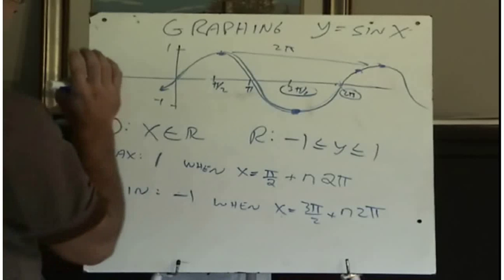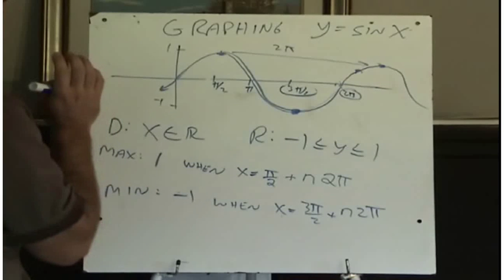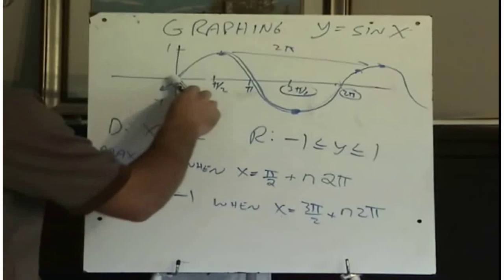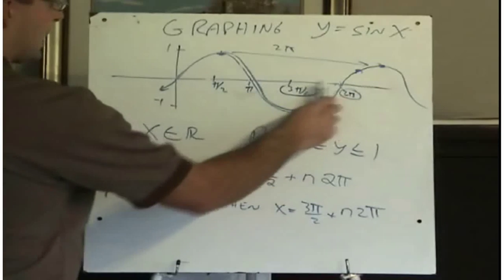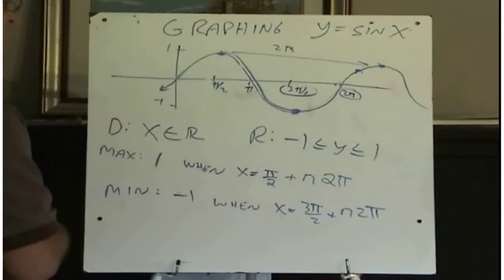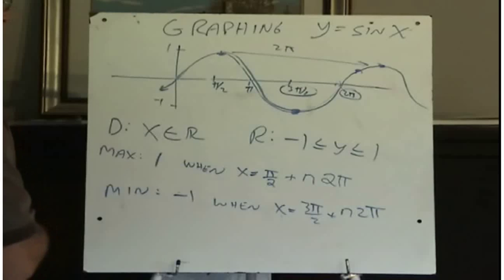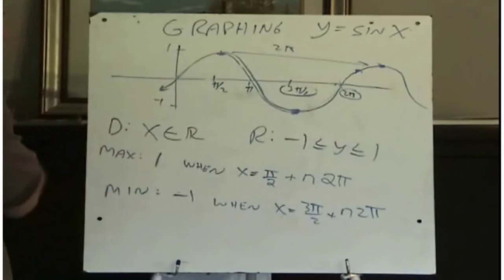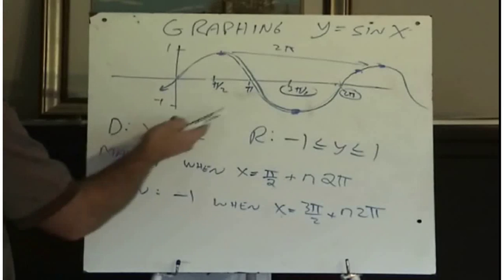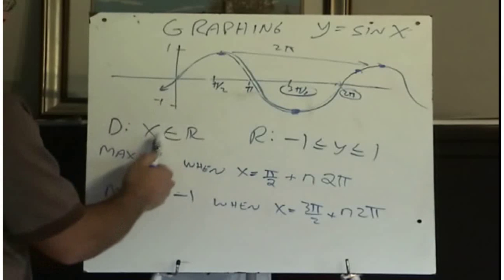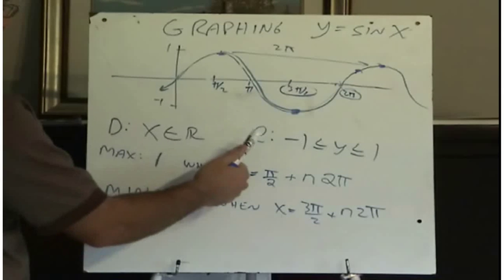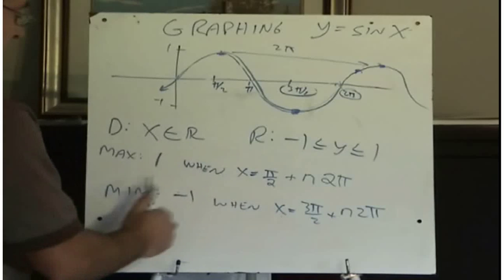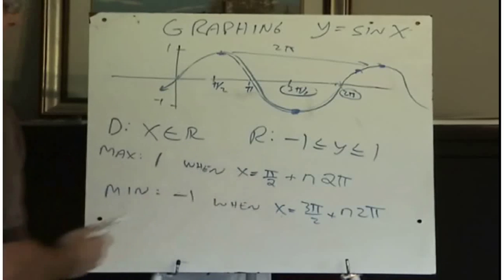Make sure for all six graphs — I've shown you the sine graph now — you have a picture of what it looks like and that you can draw that from memory. Don't rely on your graphing calculator. Once you've got the curve drawn, you can identify the domain, the range, the maximum, when that maximum occurs, the minimum, and when that minimum occurs.